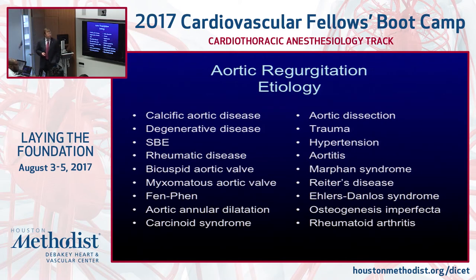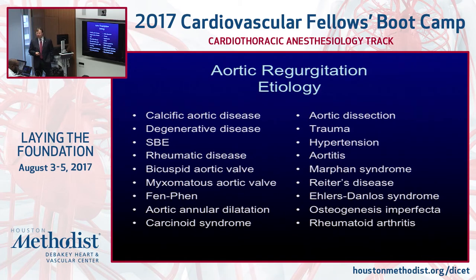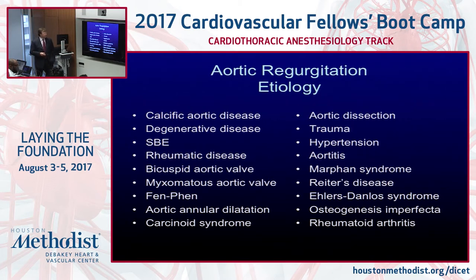The most common etiologies we see are degenerative diseases and bicuspid valves. We don't see rheumatic heart disease here as much anymore, but we still see it quite a bit — mostly with immigration and with patients who had rheumatic fever 20 to 40 years ago and are now showing signs of rheumatic heart disease. All the other causes listed are important contributors to aortic insufficiency.